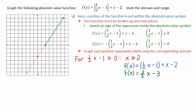We then have to plot the other piece of this function. This would correspond to 1 half x minus 1 being less than 0 or negative. This would correspond to x values that are less than 2.